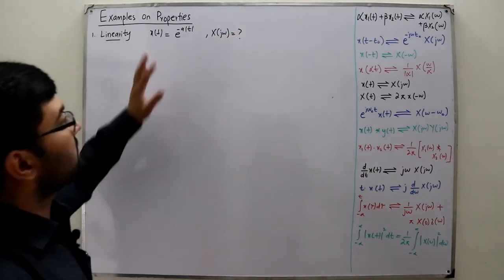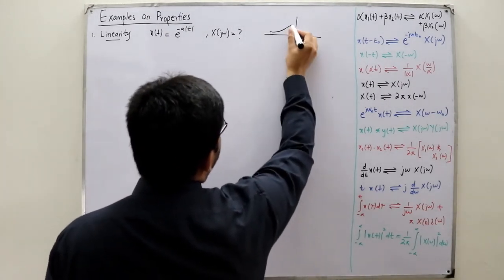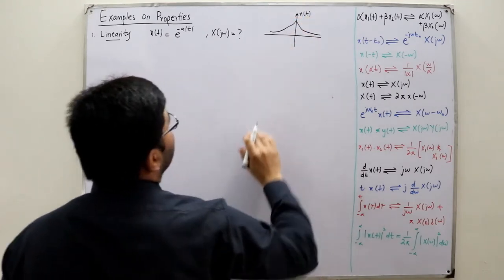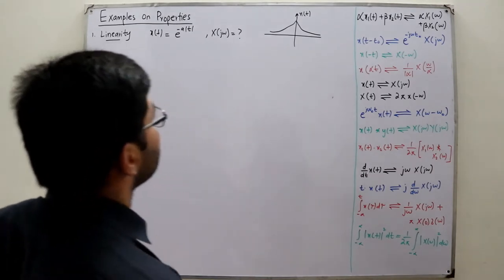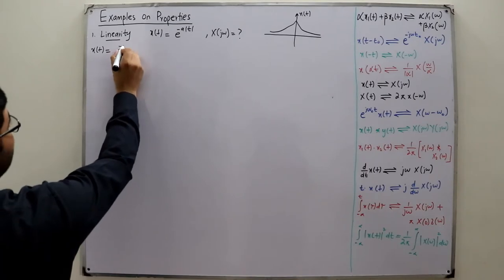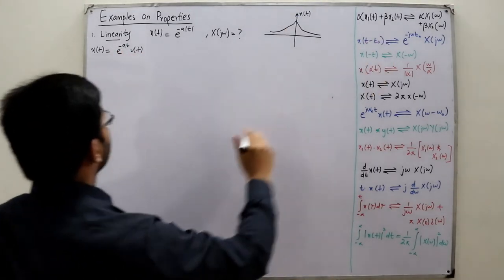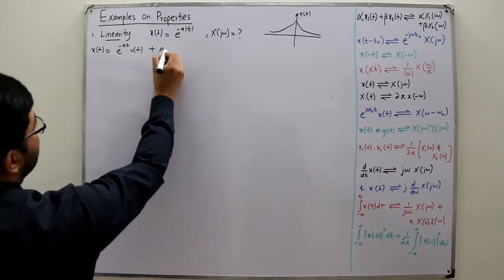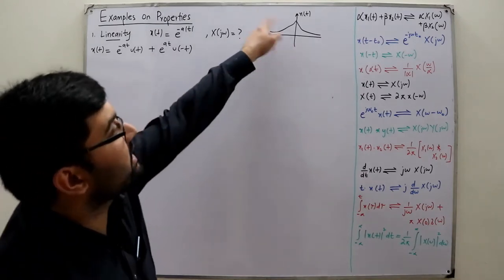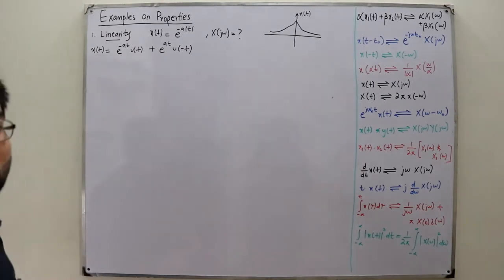You know what this signal represents — it is a two-sided exponential signal. What I can do is break it into two parts: x(t) = e^(-at)u(t), which is the right-hand side portion, plus e^(+at)u(-t), which is the left-hand side portion. So I have represented x(t) as a linear combination of two signals.